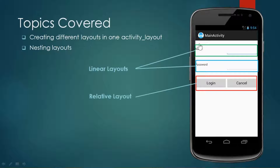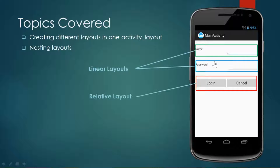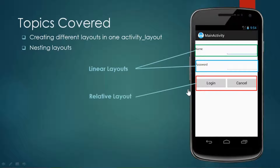The parent is a relative layout — by default when you create your project it would be a relative layout. Inside that I am going to create a small login page, where you'll have a text view for the name label, the corresponding edit text, a user password field with corresponding text, and two buttons for login and cancel. The first two rows I'm going to place in a linear layout with horizontal orientation, so one text view and edit text will be side by side. For the last part I'm going to use a relative layout.